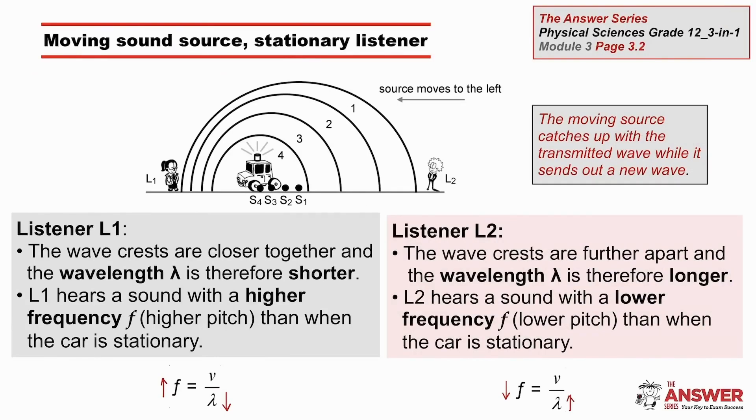If, however, the source is moving to the left, then each successive wave starts a bit further to the left. Listener 1 experiences a shorter wavelength at a higher frequency, while listener 2 experiences a longer wavelength with a lower frequency. You can see the length of the waves in the diagram. This bubble of sound is asymmetrical.